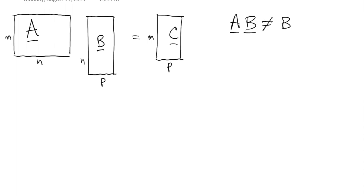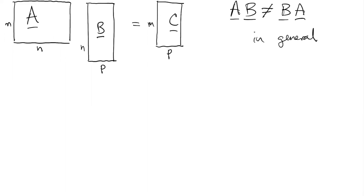To recap then, we can multiply an m by n matrix A and an n by p matrix B, and the result is m by p. The inner dimensions have to match, then the result has the outer dimensions. The big news, of course, is that matrix multiplication is not commutative. The order of the terms does matter in general.